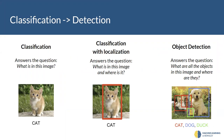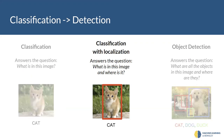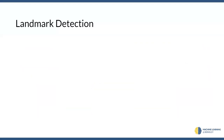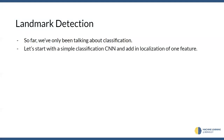We've all seen classification already, right? Classification problems essentially answer the question: what is in this image? If you have a photo of a cat, it tells you it's a cat. Next we have classification with localization, which is what we're starting with right now before we go into full object detection. Classification with localization answers: what is in this image and where is it — specifically, what part of the image is it in? Before we jump straight into that, we'll start with landmark detection. So far we've only talked about classification, but let's start with a simple classification CNN and add in the localization of one feature.